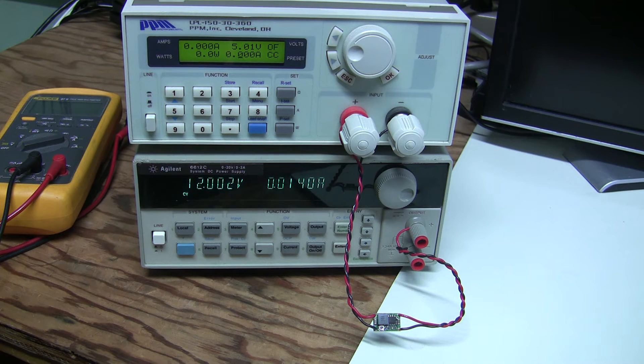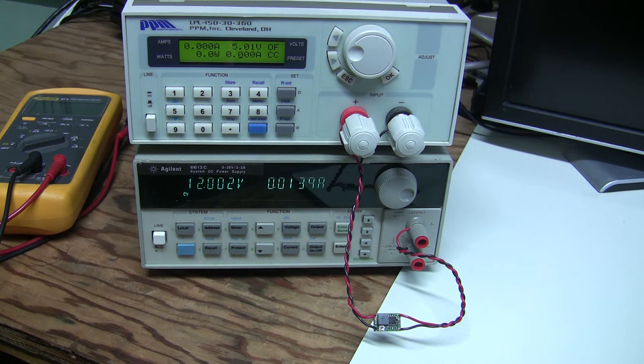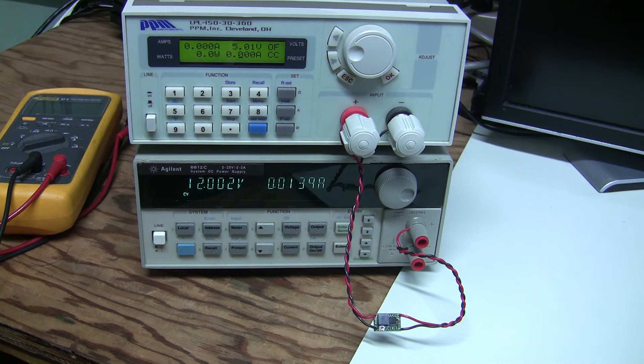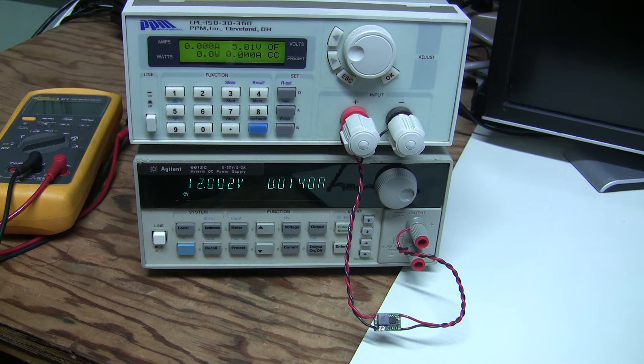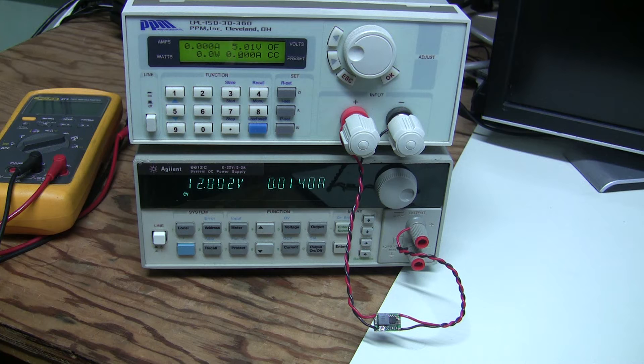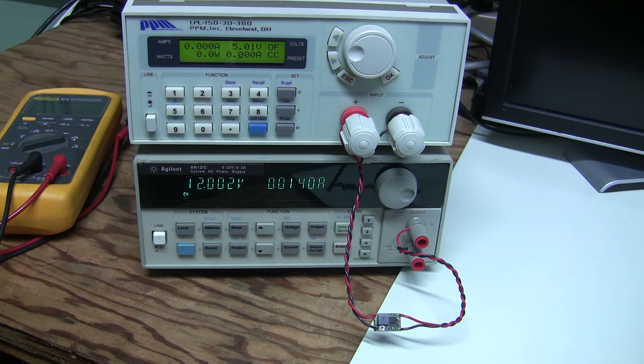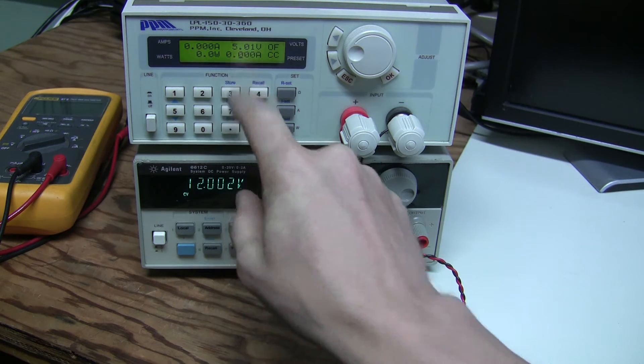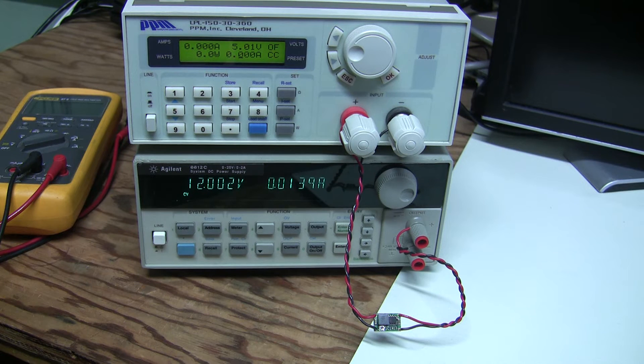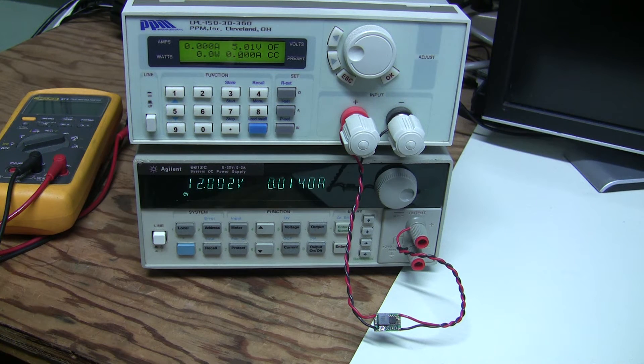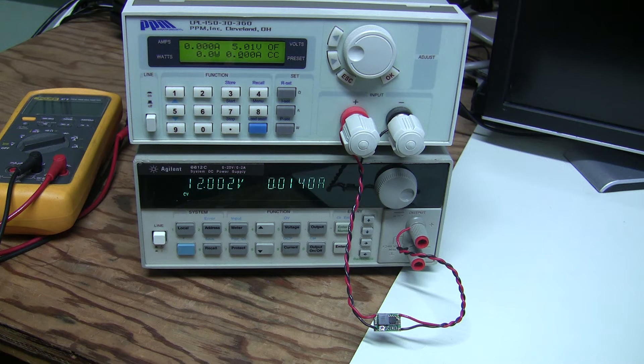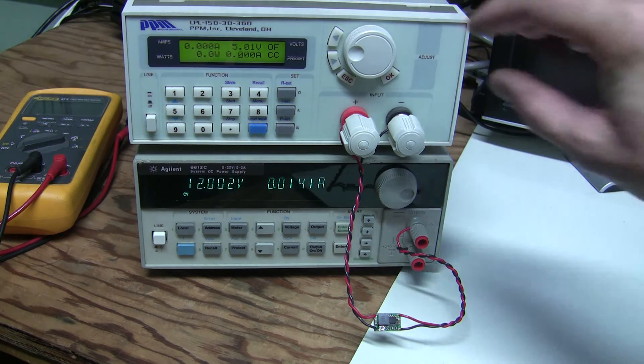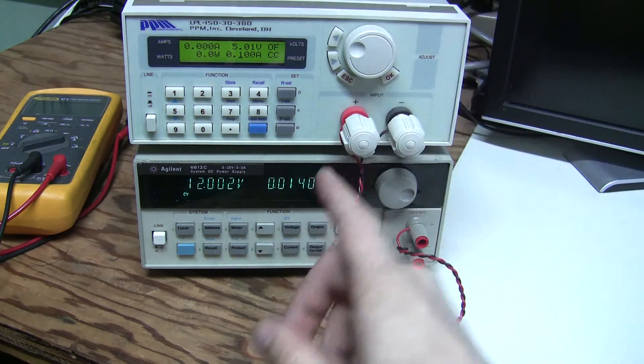There you go. The input is connected to the Agilent precision power supply and the output to the electronic load. The input is set to 12 volts and it consumes about 14 milliamps when there is no load. I already adjusted the output to 5 volts, so we have the same use case I needed for my electric vehicle charger project: 12 volts in, 5 volts out. Let's give it a try at 100 milliamps first.